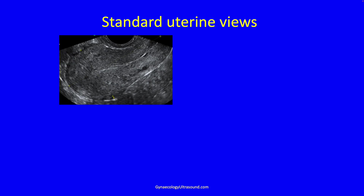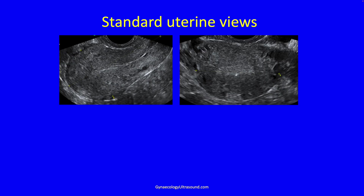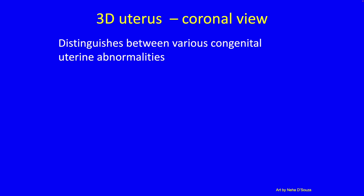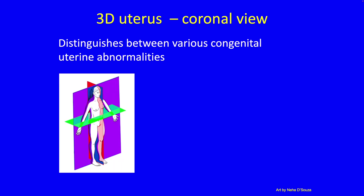Standard uterine views in 2D are the longitudinal view and the transverse view. But if you get a transverse view like this, how do you know what shape the uterus is? You need the coronal view, and that allows you to distinguish between the various congenital abnormalities. It's this purple line — it divides you into a front half and a back half. And to obtain that view you need 3D.